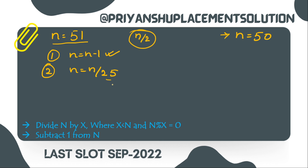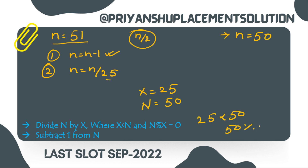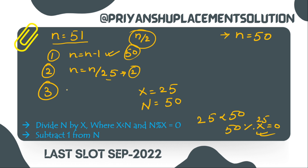We verify: X equal to 25 is less than 50, and 50 percent 25 equals 0 — both conditions are satisfied. So from 50 we get 2, then N equal to N minus 1 gives 1. For odd numbers we follow three steps. For even numbers we follow two steps.